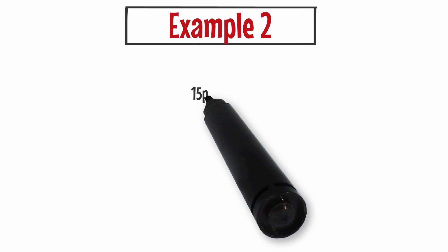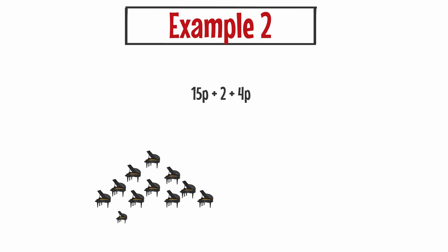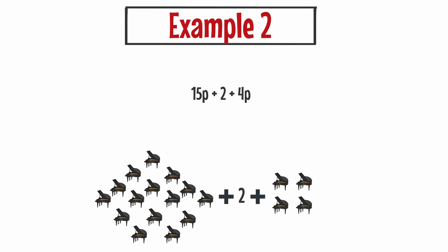Example number two. Let's say I have the expression 15p plus 2 plus 4p. I like to think of my variables as items. So let's say my P stands for pianos. This expression basically says I have 15 pianos and then I want to add 2 of something, but the 2 that I'm adding are not pianos. Then I want to add 4 pianos. So I can't group the 2 that's in the middle, but I can group all of my pianos. So 15 pianos plus 4 pianos equals 19 pianos, and then I'm just going to add my plus 2 to the end. So the answer to example number two is 19p plus 2.